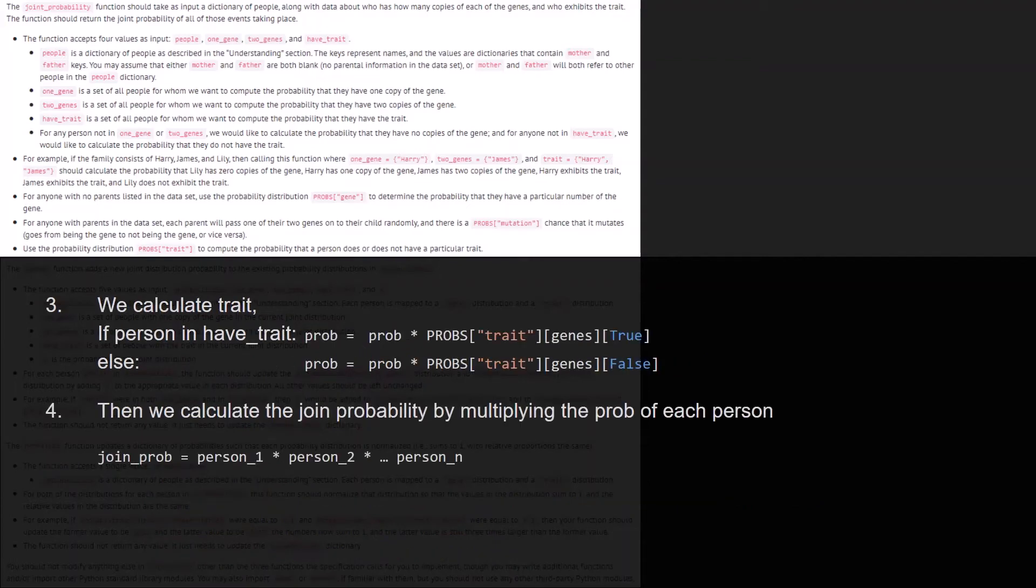Then we calculate the trait. So if the person is in have trait, we calculate the probability by multiplying the actual probability calculated according to the parent or the dictionary and multiply it by the trait according to true or false depending on if the person have a trait or not. And finally, we calculate the joint probability by multiplying the probability of each people in the family, for each person in the family.